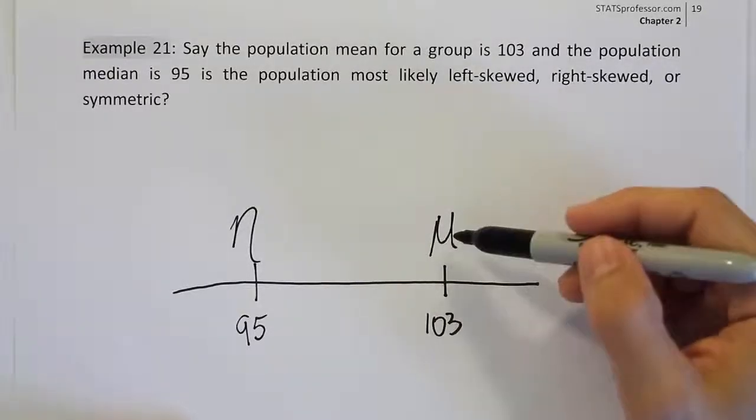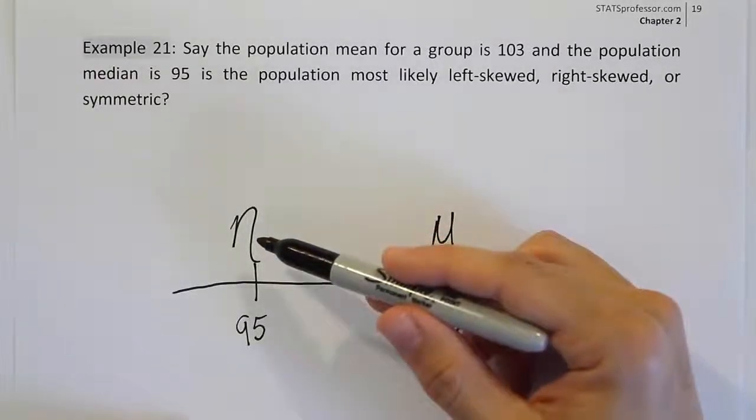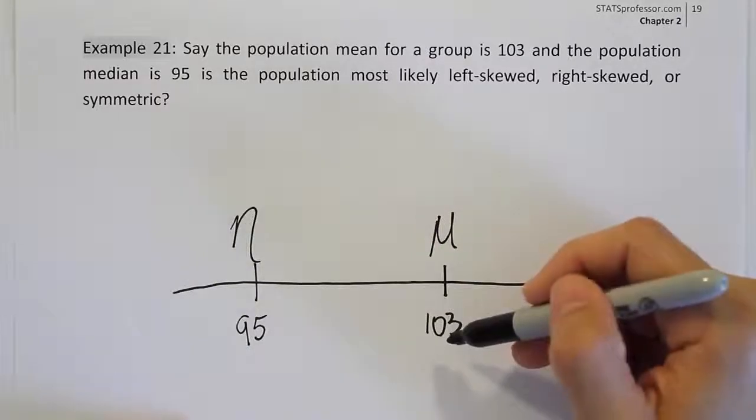Okay. So when we put it together, mu here is to the right of the median eta. So what that tells us is that this is right skewed.